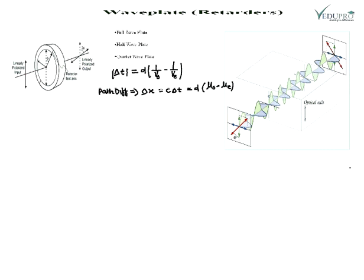If the thickness of the plate is d, the time difference between the two beams is: Δt = d × (1/v₀ − 1/vₑ). The path difference is then: Δx = c × Δt = d × (μ₀ − μₑ), where μ₀ and μₑ are the refractive indices of the ordinary and extraordinary rays respectively.